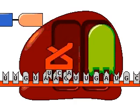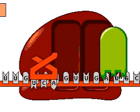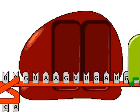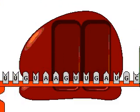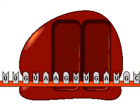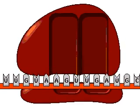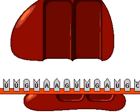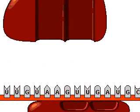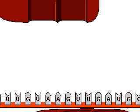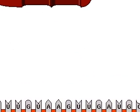This frees the polypeptide chain, the last tRNA, and the release factor. The two ribosomal subunits dissociate from the mRNA and are free to form another initiation complex.